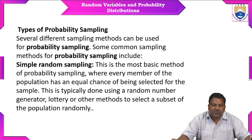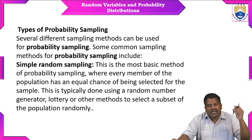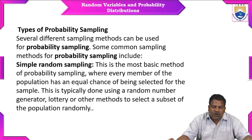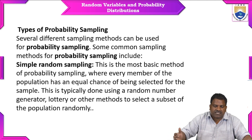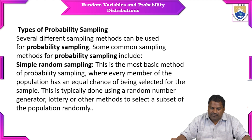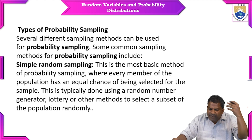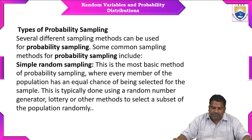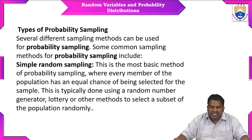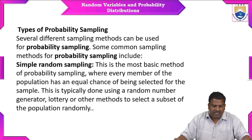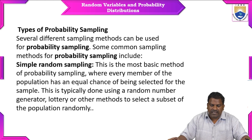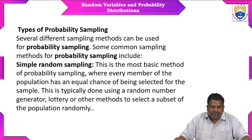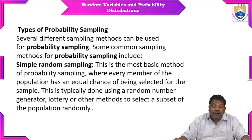Now let us see types of probability sampling. Several different sampling methods can be used. Some common methods include simple random sampling — the most basic method of probability sampling, where every member of the population has an equal chance of being selected. This is typically done using a random number generator, lottery, or other methods to select a random subset of the population.